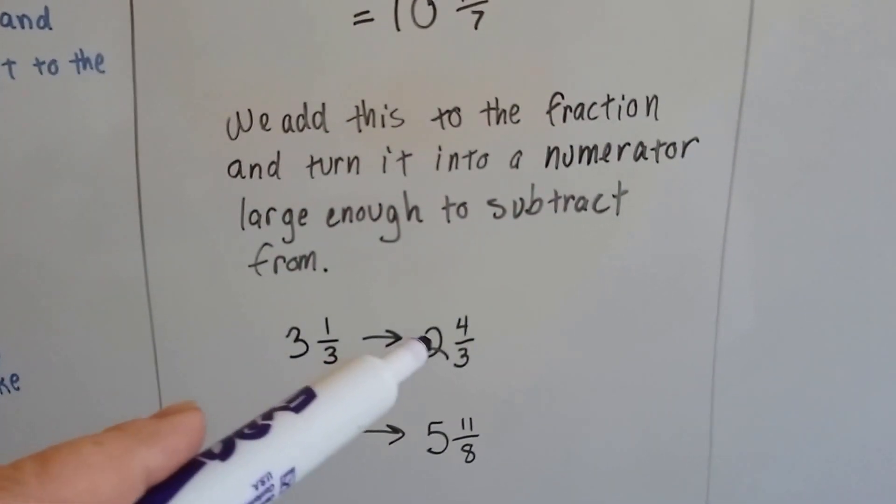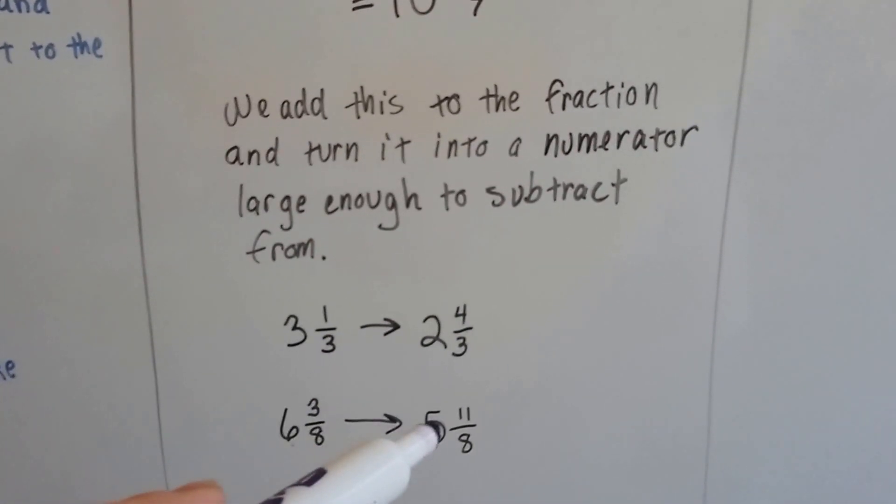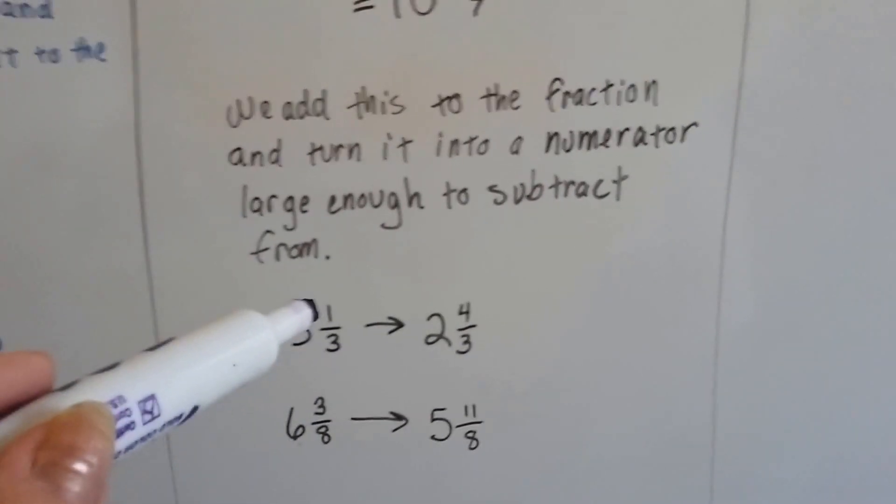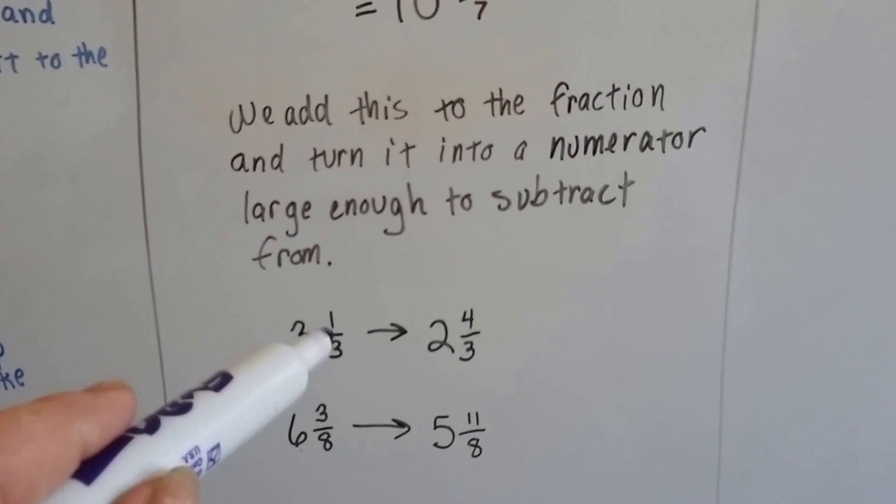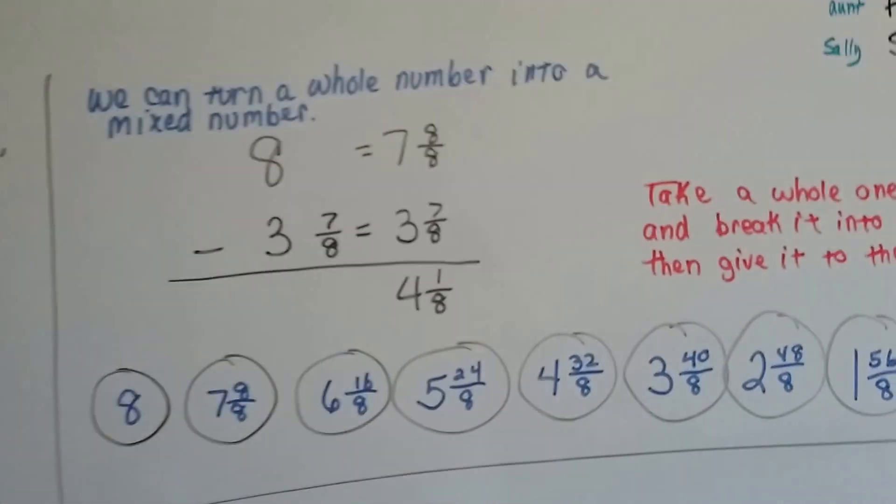3 and 1 third could become 2 and 4 thirds. 6 and 3 eighths could become 5 and 11 eighths. Because we're pulling an 8 eighths out of this, or a 3 thirds out of that one. It's whatever the denominator is that'll guide you for what's going to happen.